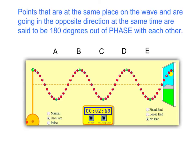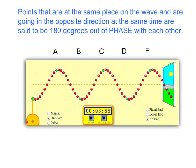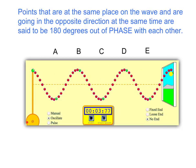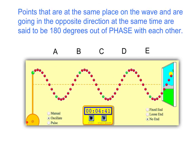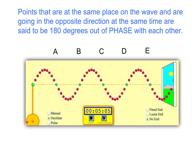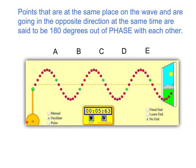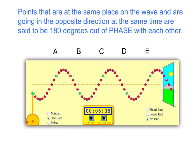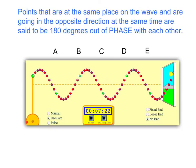As we watch this, are there any other two points that are also out of phase with each other? B and C are out of phase, and C and D are as well. Any two points that are moving in opposite directions at the same time are said to be 180 degrees out of phase.